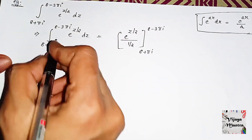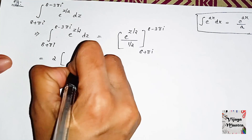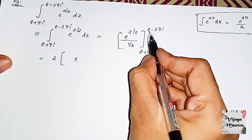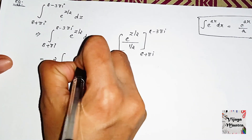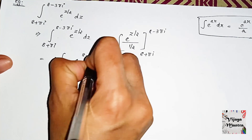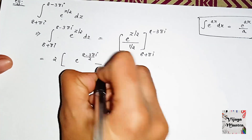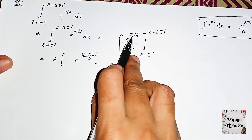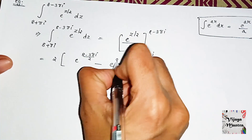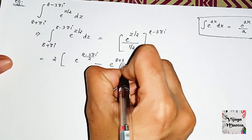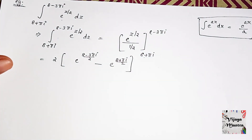The limits are: upper limit (8+πi) and lower limit (8−3πi). This is the substitution of integration. We get (1/2) divided by (1/2), giving 2 times e^((8−3πi)/2) minus e^((8+πi)/2).